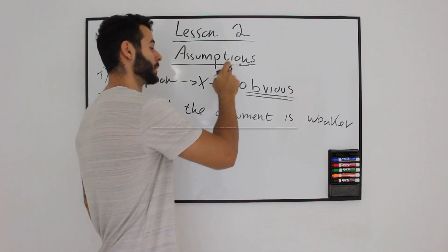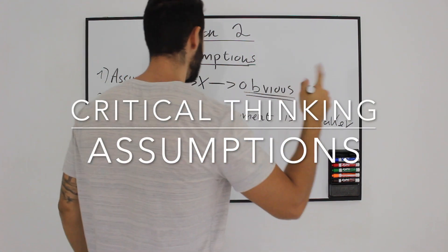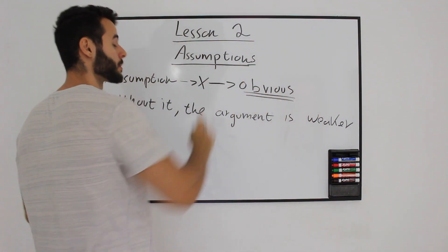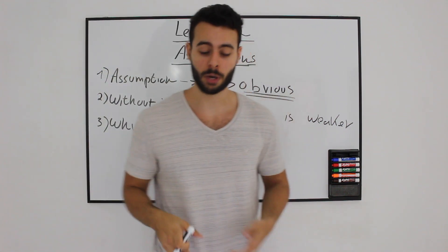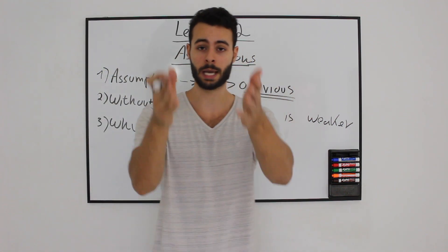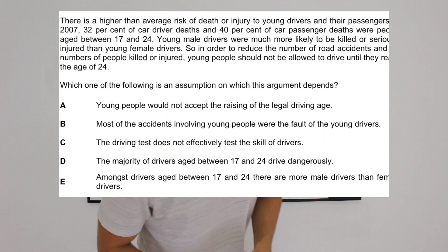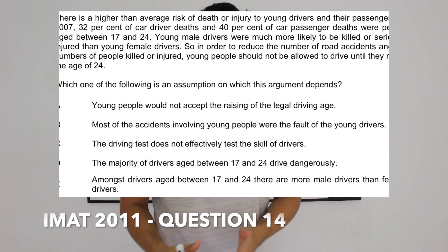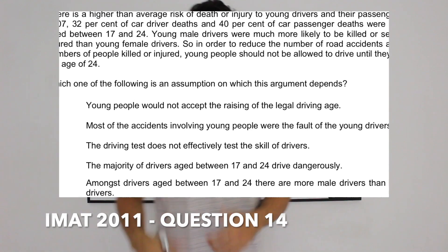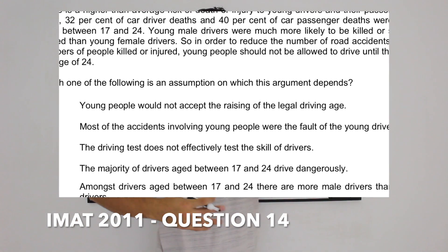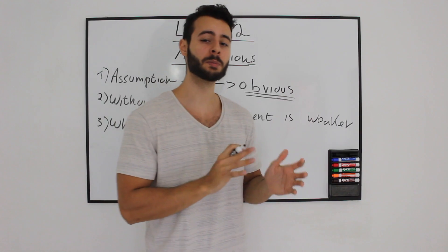Today we are going to talk about critical thinking, and the first skill I want to teach you is assumptions. Let me give you an example for a question for assumption. I will read it out loud and you will see it on the screen. Which one of the following is an assumption on which this argument depends? So this kind of question is very repeatable, but in different forms.